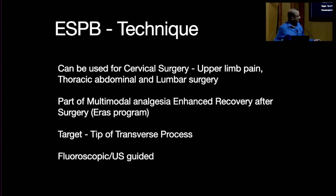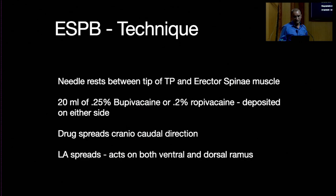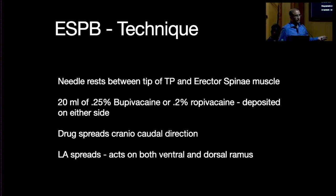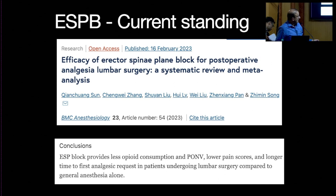The target is the tip of the transverse process. It can be done fluoroscopically or ultrasound-guided. The needle rests on the tip of the transverse process, below the erector spinae muscle. For unilateral endoscopic or tubular disc surgery, inject on one side; for fixation procedures, inject bilaterally. The erector spinae plane block provides less opioid consumption and lower pain scores.